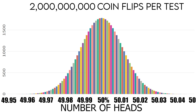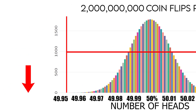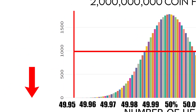The way most people think about this is only that the more you do something, the closer it's going to be to the probability. But the way I like to think about it is: the more you do something, the less far away you're able to be from the probability. With 2 billion coin flips, all of our results should fall within a specific range. If we did 2 billion coin flips and it landed way outside that range, we'd know something's off.